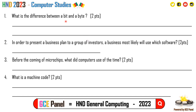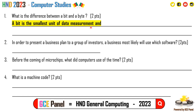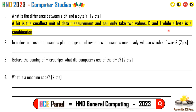Section B, Question 1: What is the difference between a bit and a byte? A bit is the smallest unit of data measurement and can only take two values — zero and one — while a byte is a combination of eight bits. Two points.